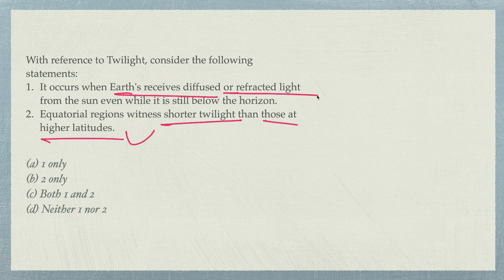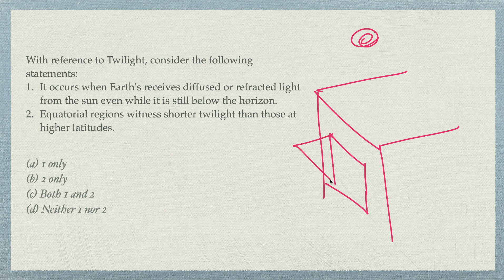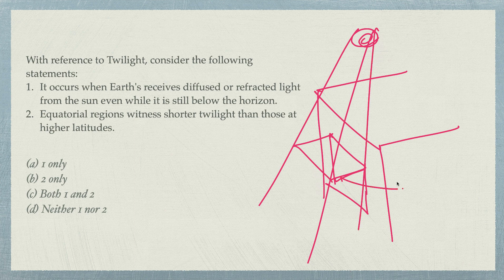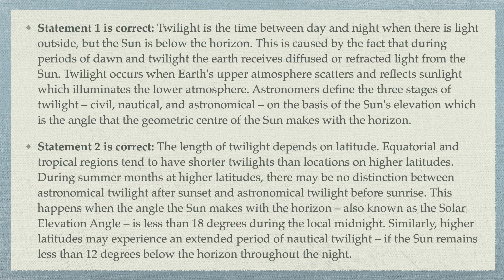Twilight occurs when the earth receives diffuse or refracted light from the sun. Diffuse light means — imagine a room with a window; you put a chajja (overhang) over it. Direct sunlight cannot enter, but you still get light in the room. That's diffuse light — light that has bounced off and come back to you. So when the sun is still below the horizon, diffuse light is still reaching us. Statement one is correct. Both statements are correct.